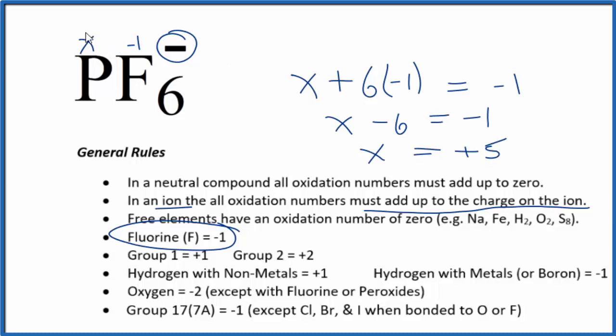So the oxidation number here on the phosphorus is going to be positive five. And we can check our work. Six times this negative one, that's negative six, plus five. That gives us this negative one here, which is the charge on the PF6 minus ion.